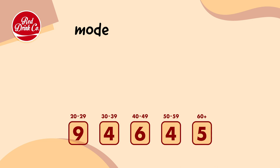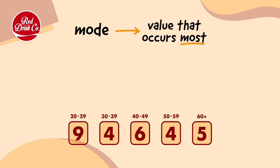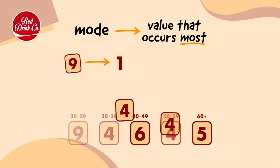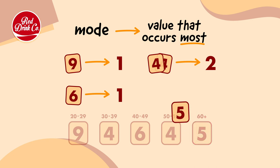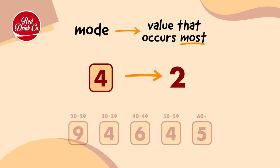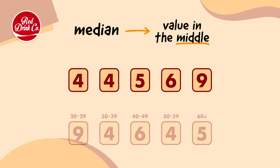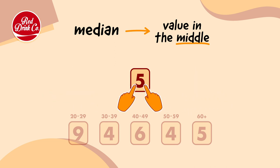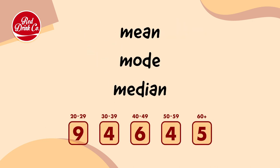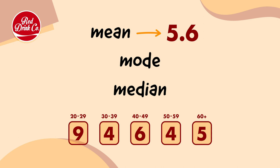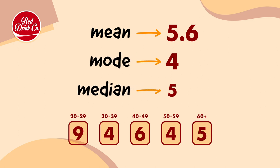Let's work out the mode next. The mode is the value that occurs the most. In this case, 9 turns up once, 4 turns up twice, 6 turns up once, and 5 turns up once. 4 turns up the most, so the mode is 4. The last average to work out is the median — the value in the middle. Putting the data in order and counting inwards from both sides, the median is 5. So the mean amount of red drink is 5.6 cans, the mode is 4 cans, and the median is 5 cans.